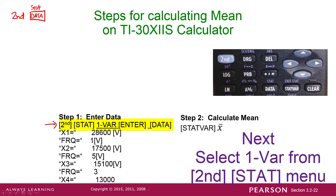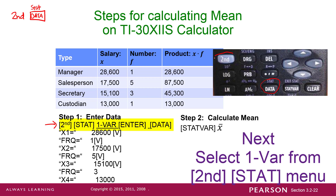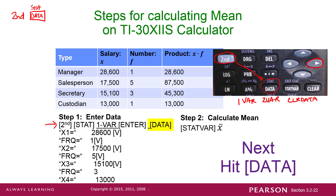So here's the second function — see the arrows? In ours, it's going to be Second and then Stat. And then what happens is you see a screen that says 'One Var,' 'Two Var.' And if you arrow to the right, you will also see 'Clear Data.' So what I'm recommending is that we go ahead and clear the data out first. Arrow over until it underlines 'Clear Data' and hit Enter.